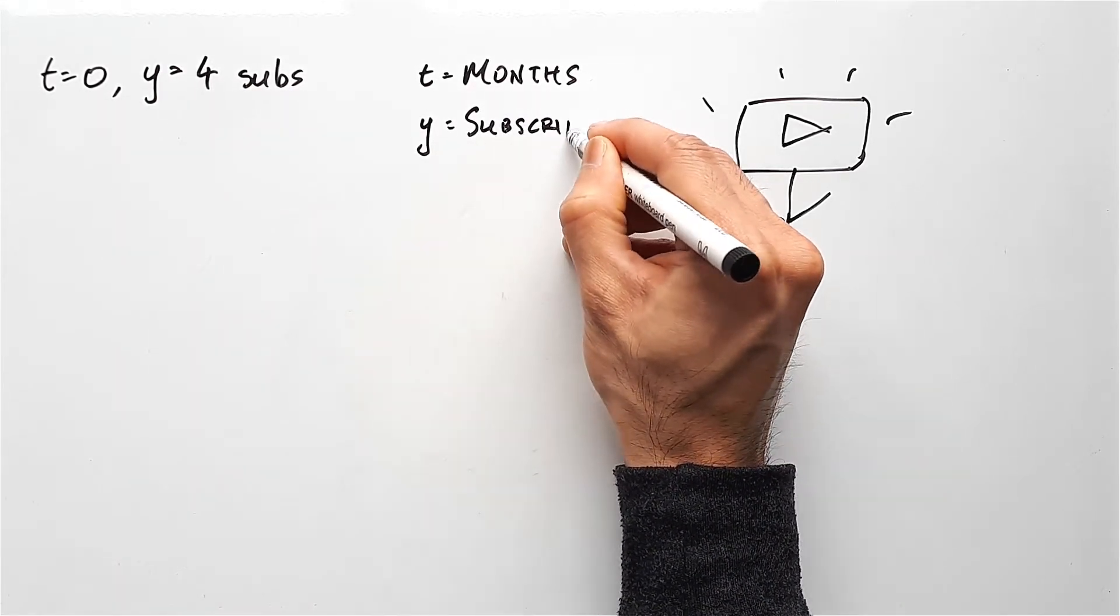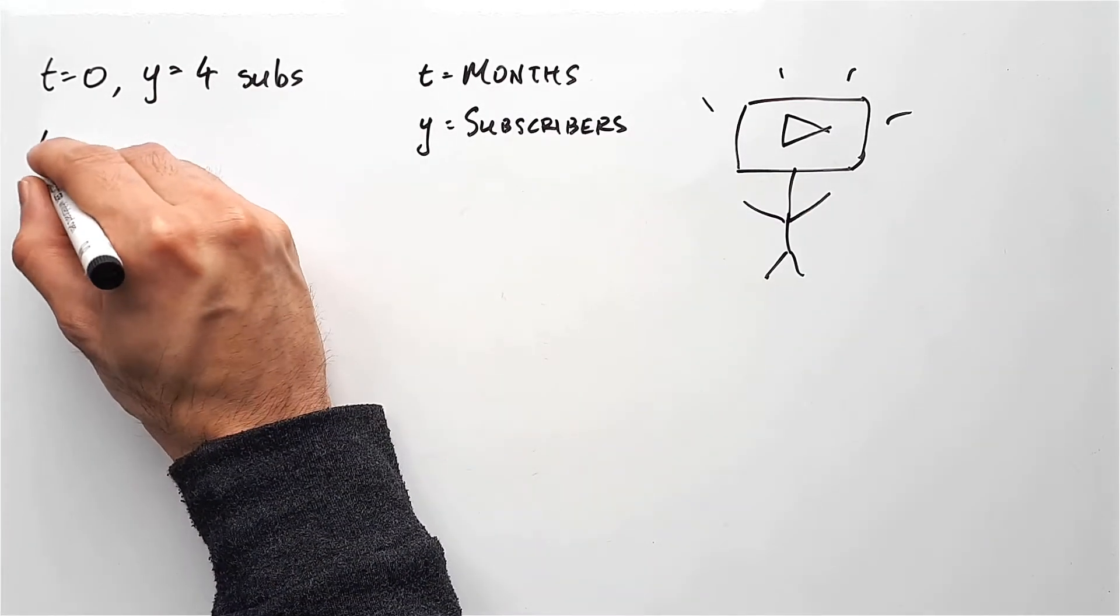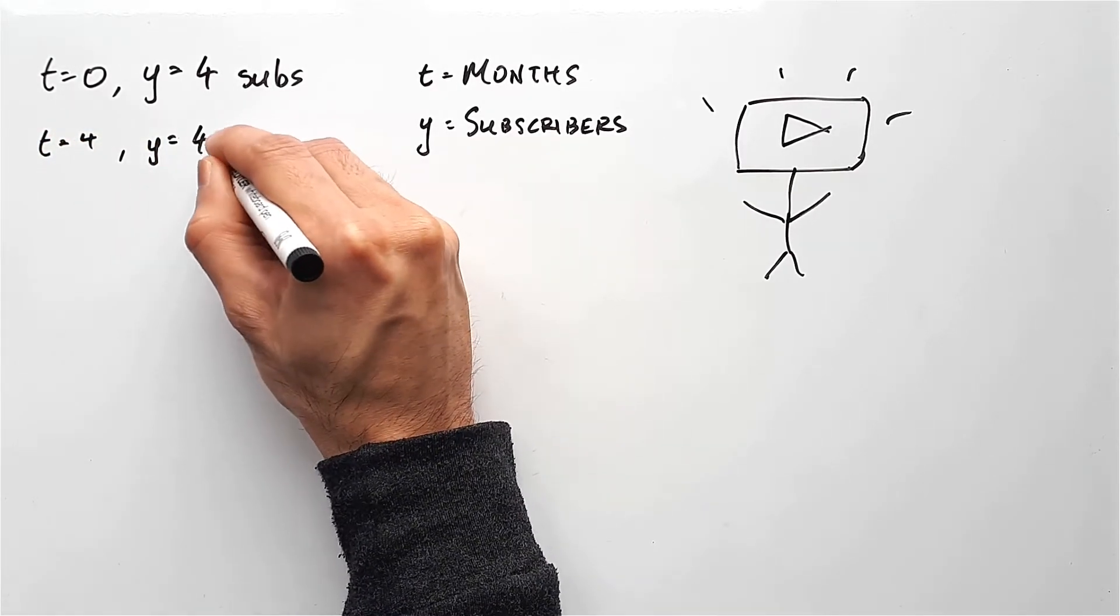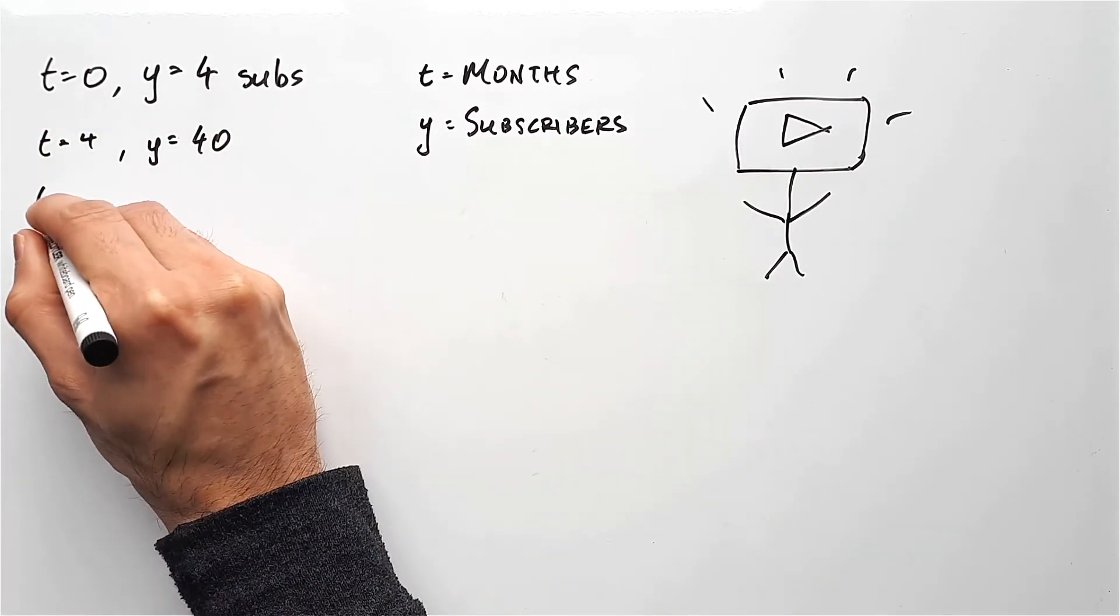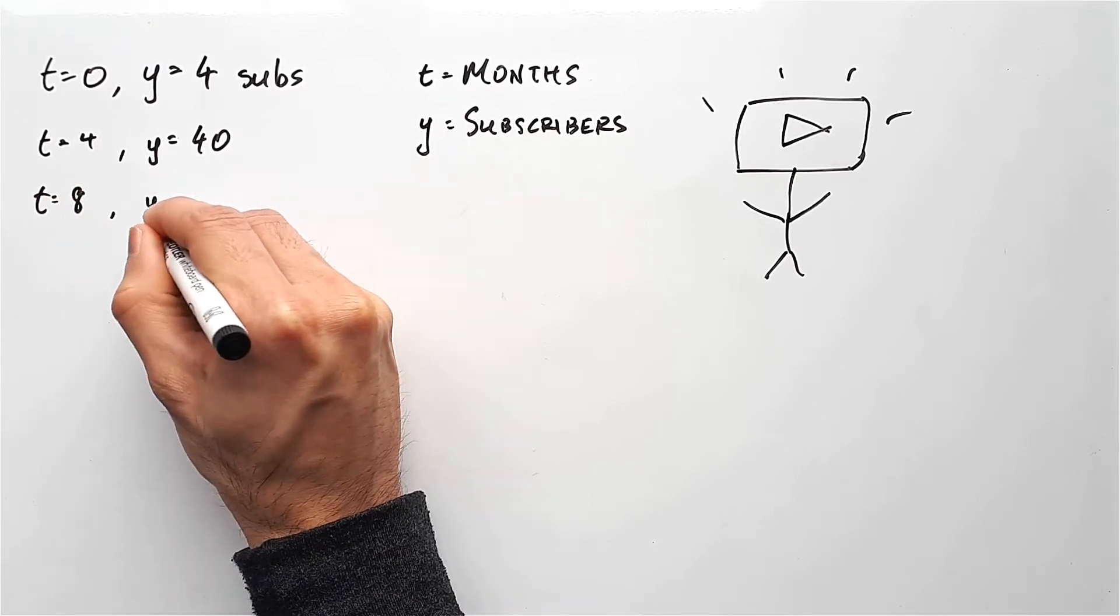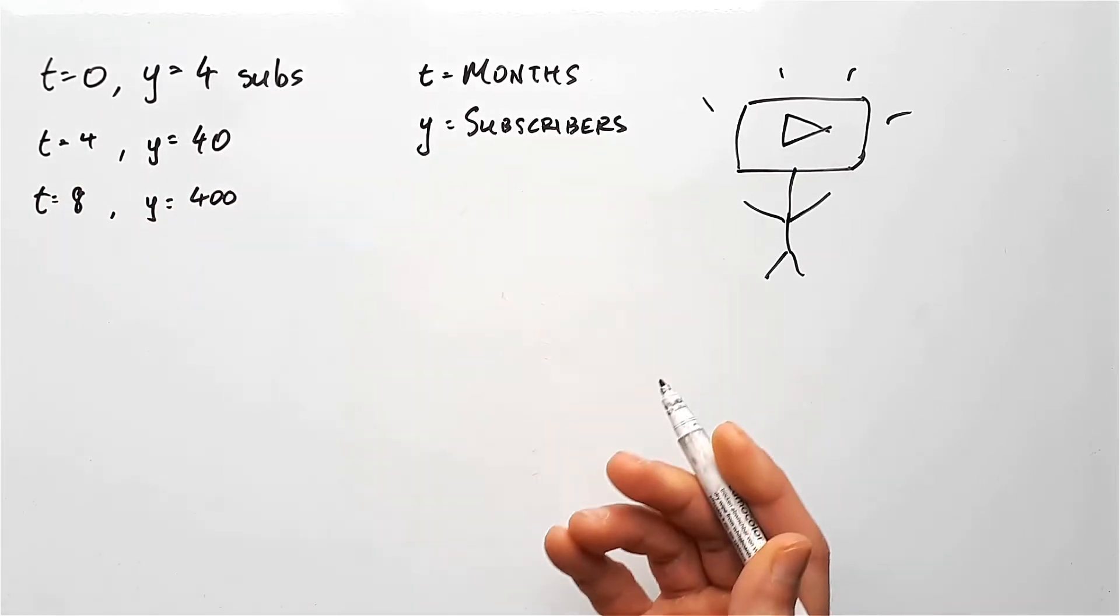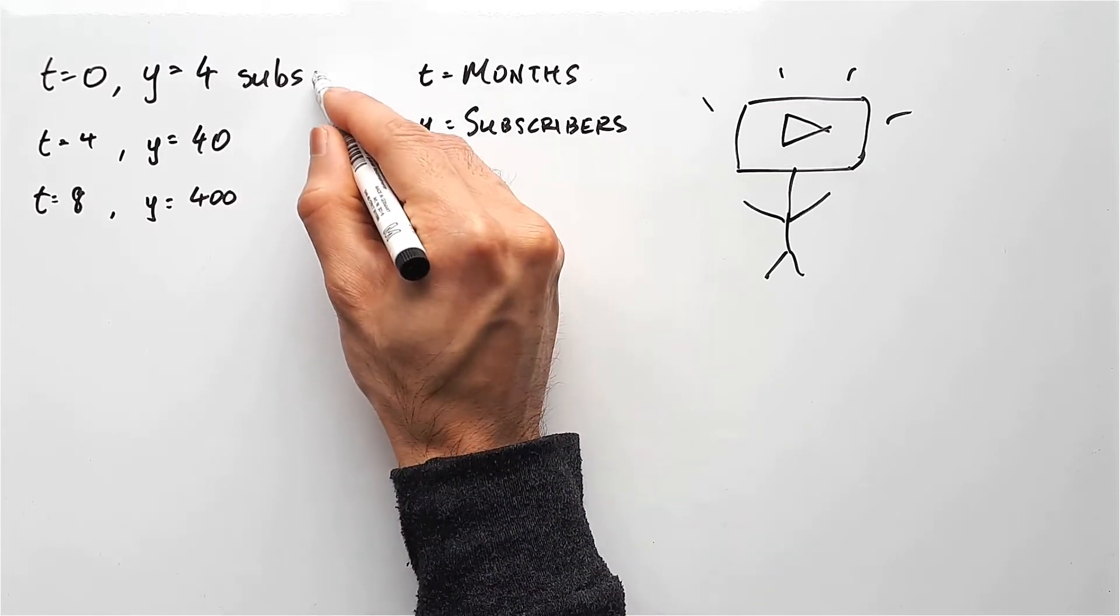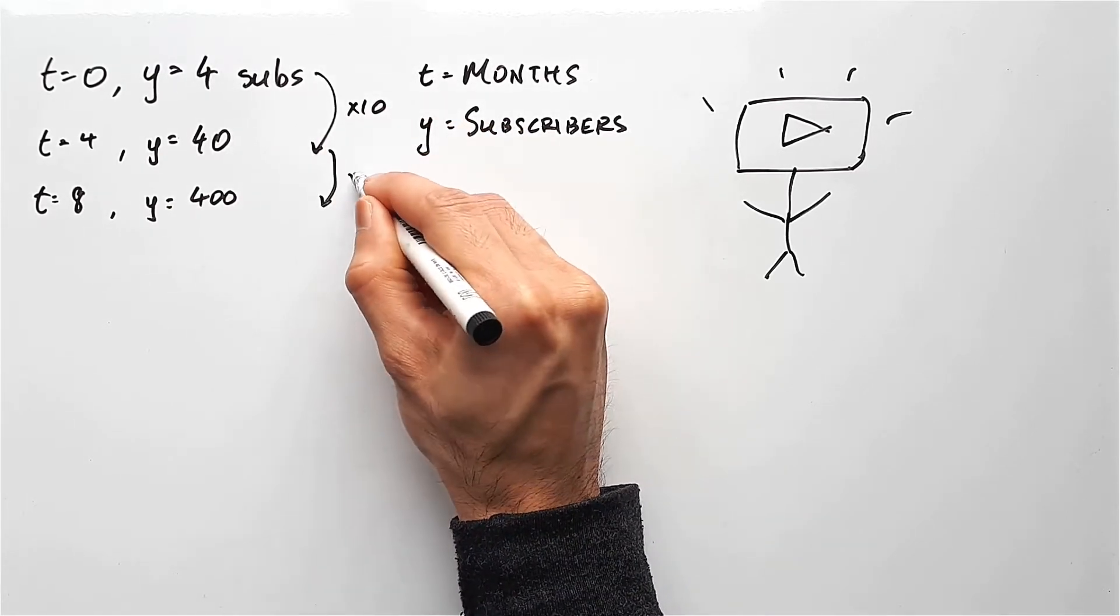Now let's say you've been running this channel for quite some time and you've noticed that after four months, your subscribers have gone up to 40 subscribers. And after eight months, it's gone up to 400. If you look closely, you'll notice that there is a discernible pattern here. Every four months, it increases by 10 times.